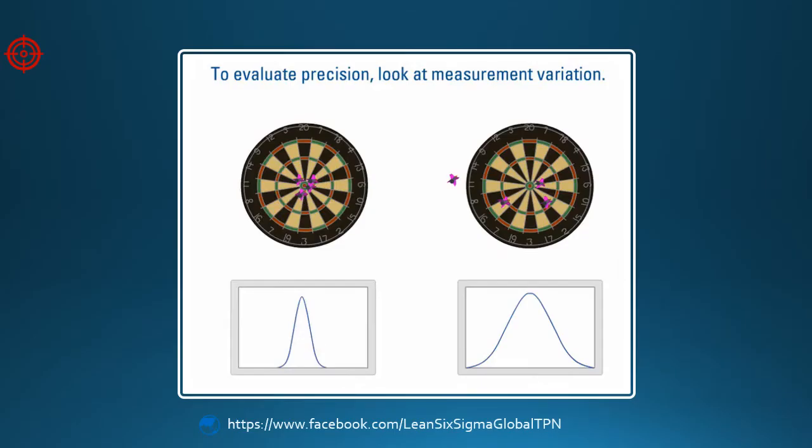To evaluate precision, we look at how spread out or variable the measurements are. One way to do this is to look at the distribution of the data.